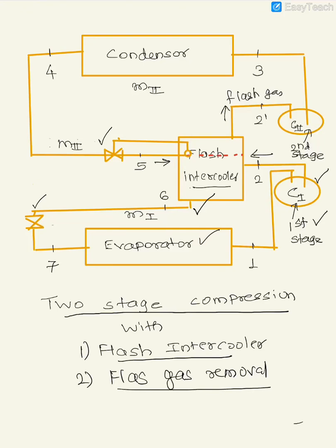Dear friends, I would like to explain two-stage compression with flash intercooler and flash gas removal. This schematic which I have drawn shows a flash intercooler. It is actually a flash chamber used as an intercooler, so it is known as a flash intercooler. The compression happens in two stages: compressor 1 and compressor 2.